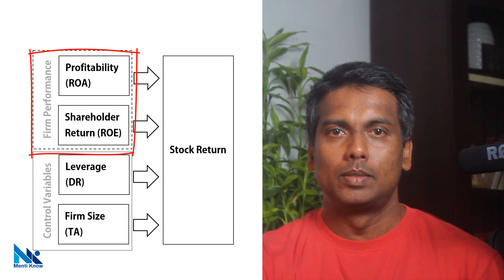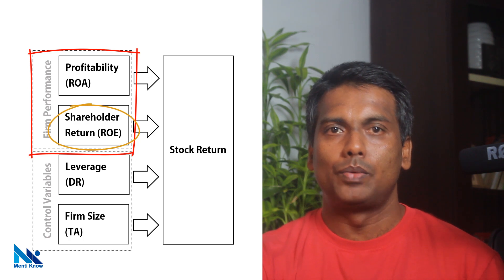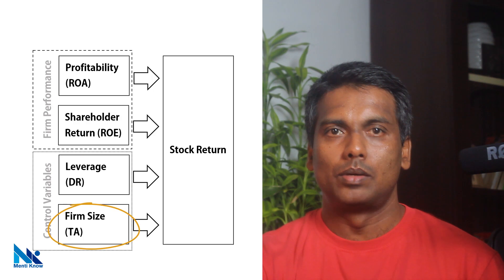Assume that I use two variables to measure firm performance. First one is profitability, measured using return on assets. And the second one is shareholder return, measured using return on equity. Further, I have leverage and firm size as control variables.